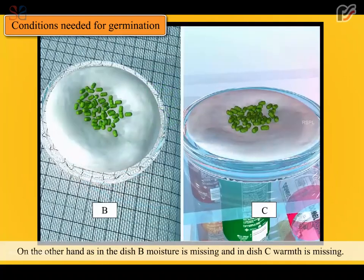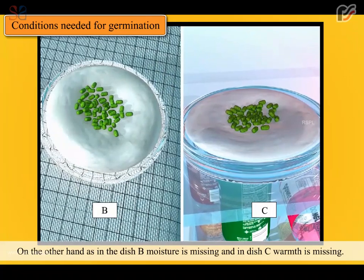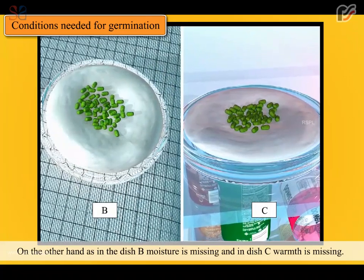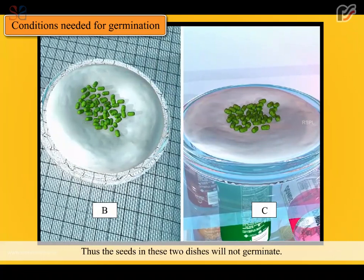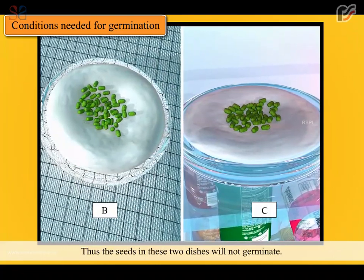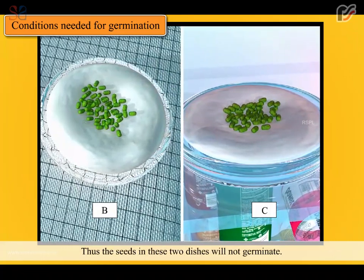On the other hand, as in dish B, moisture is missing, and in dish C, warmth is missing. Thus, the seeds in these two dishes will not germinate.